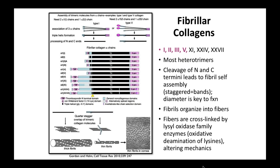Where does this nucleation happen — inside the cell versus outside? This all happens inside the cell, and much of the post-translational processing happens during secretion. There's a beautiful diagram from Mitsuo Yamauchi showing exactly where everything occurs. Lysyl oxidase cross-linking occurs during the process of secretion or very early after secretion. All of these events are occurring within the cell, close to the cell membrane, or just post-secretion.